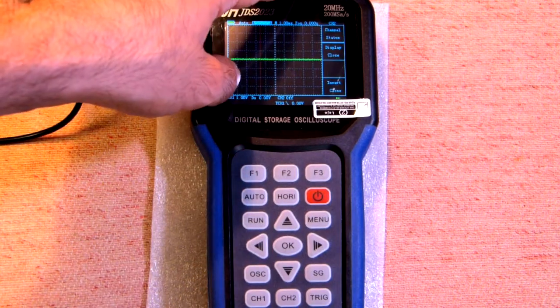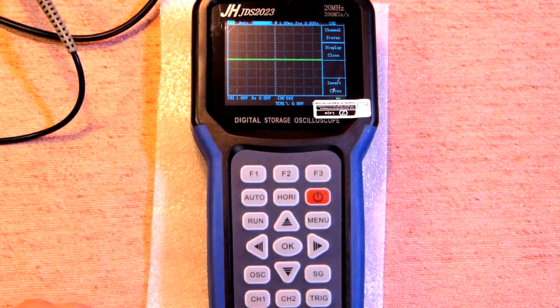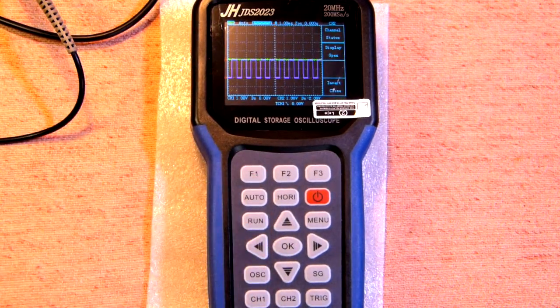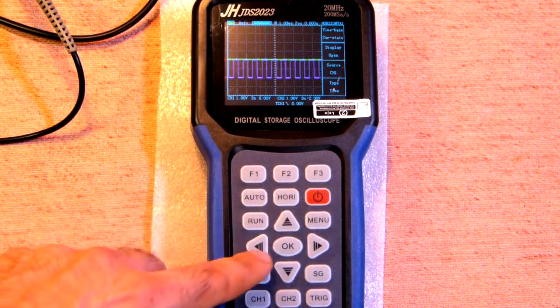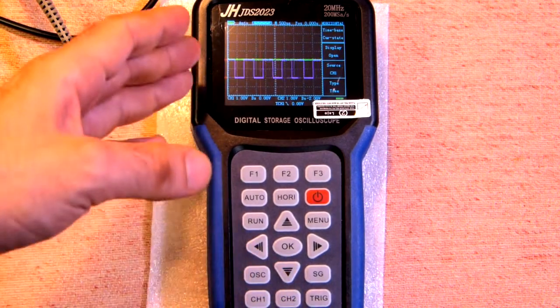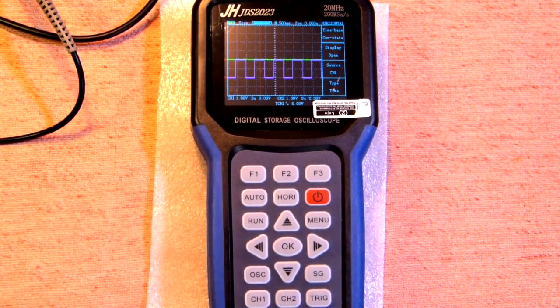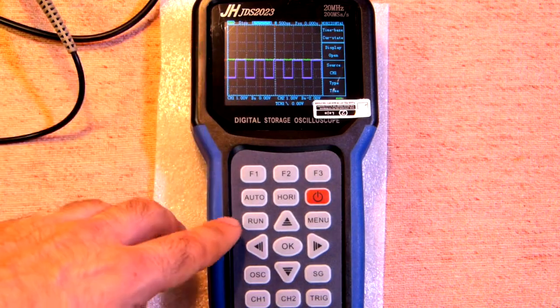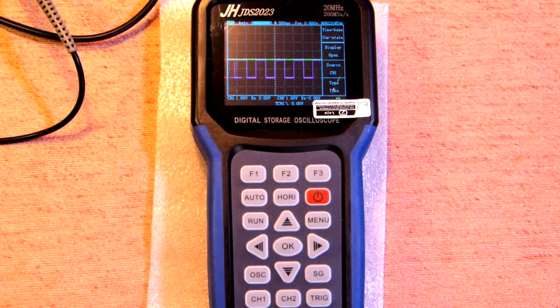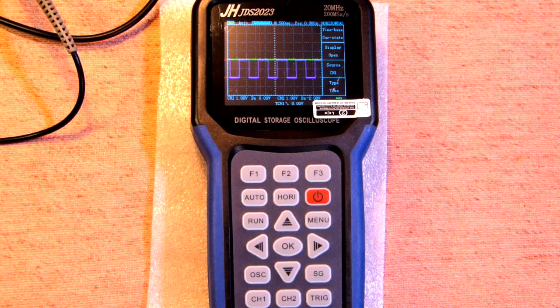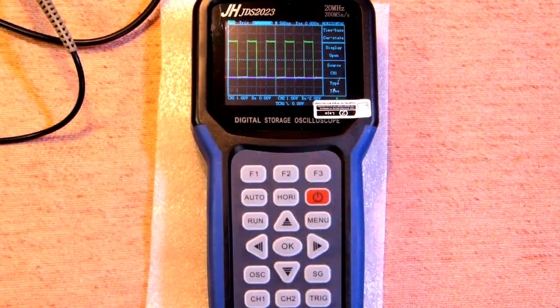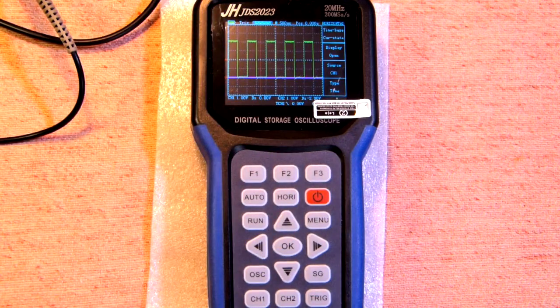Now we have the probe on the second channel, we move to second channel, display closed display open and here we have the signal. If we would like to freeze it we press run and see everything, after that to unfreeze we press it again. Now we have the signal on the channel 1.